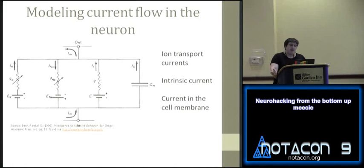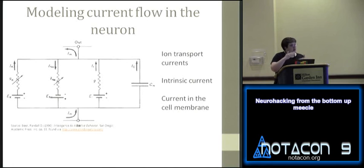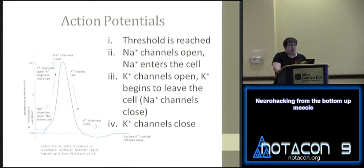Modeling current flow within a neuron is basically a matter of summing up what I've listed: there's an intrinsic current created by the neuron's surroundings, the current of various ions based on whether they're being pumped or diffused, the membrane capacitance, and any membrane current that could leak out. When you sum all that together you get the total current for any given neuron.